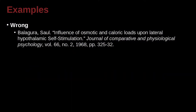A straightforward example here — Bagora Sol. We have the paper named 'Influence of Osmotic and Caloric Modes upon Lateral Hypothalamic Self-Simulation' — the quotation marks tell us it's an article. It's inside the Journal of Comparative and Psychological Psychology. We have the volume number and issue number in commas, the year 1968, and the page numbers CP325-332.